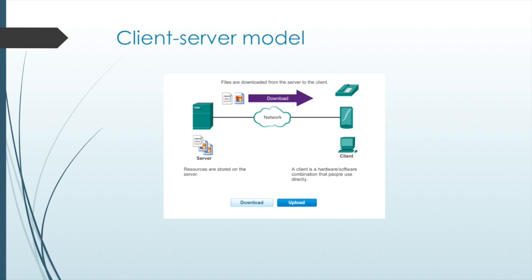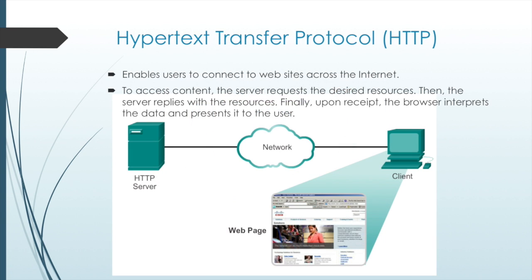In the client-server model, the device requesting the information is called a client and the device responding to the request is called a server. Client and server processes are considered to be in the application layer. The client begins the exchange by requesting data from the server, which responds by sending one or more streams of data to the client. Application layer protocols describe the format of the requests and responses between clients and servers, in addition to the actual data transfer. This exchange may also require user authentication. Web browsers are the type of client application a computer uses to connect to the World Wide Web, and the web server runs as a background service making different types of files available.